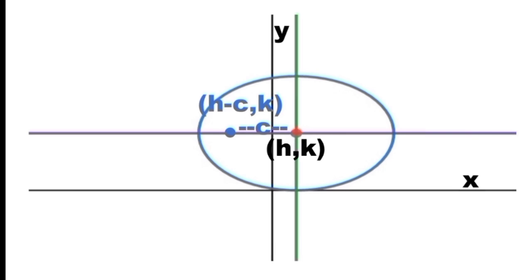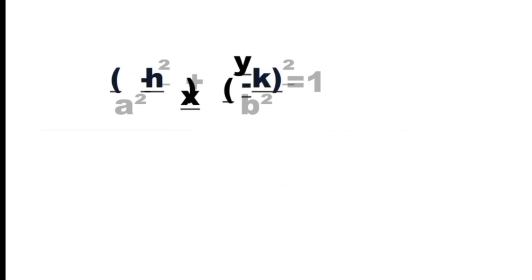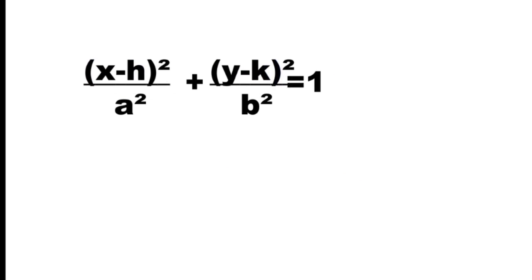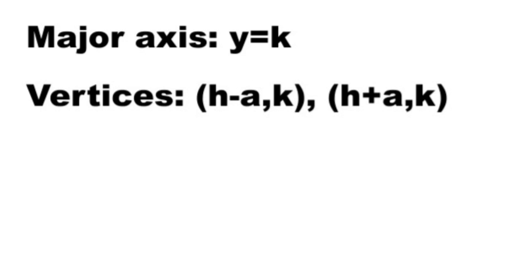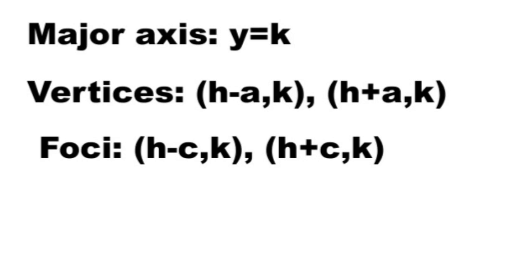This ellipse has the equation: quantity (X minus H) squared over A squared, plus quantity (Y minus K) squared over B squared, equals one. So the major axis is Y equals K. The left and right vertices have coordinates (H minus A, K) and (H plus A, K). And the foci have coordinates (H minus C, K) and (H plus C, K).